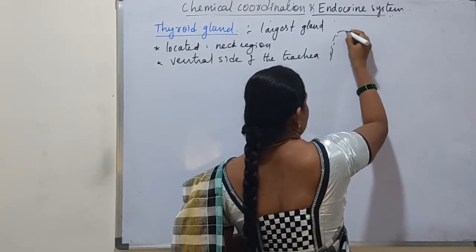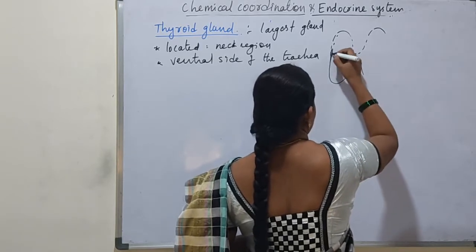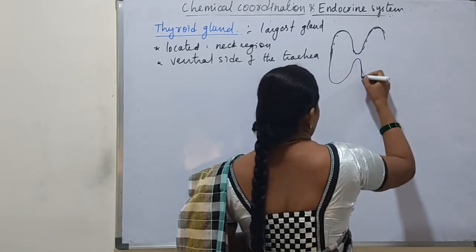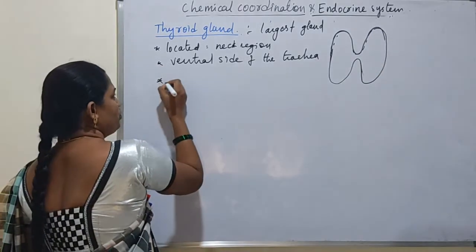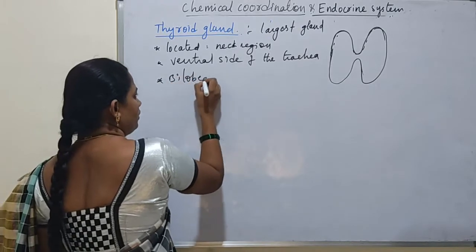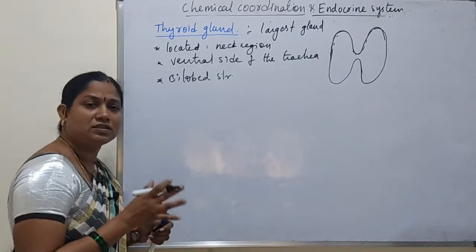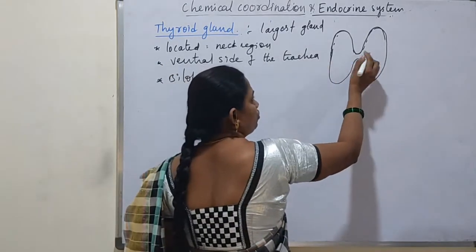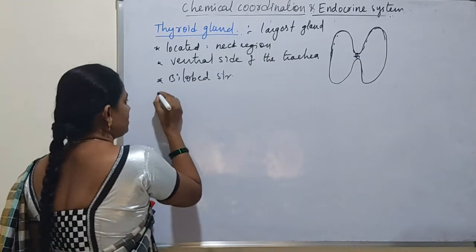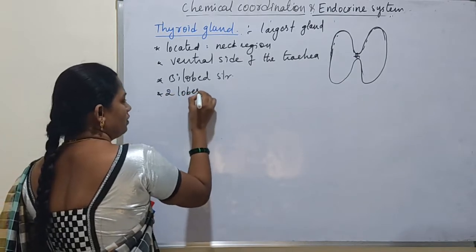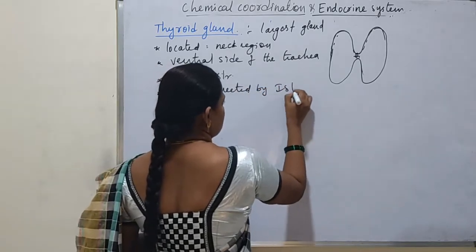It is a bilobed structure — two lobes are present. The two lobes are connected by a connection called the isthmus.